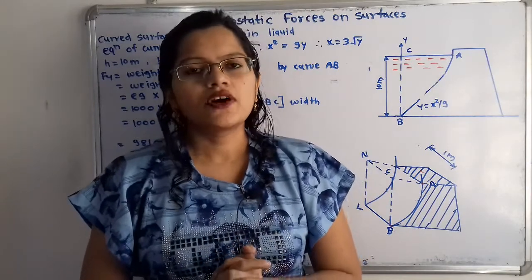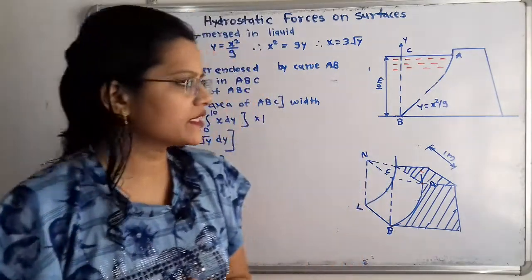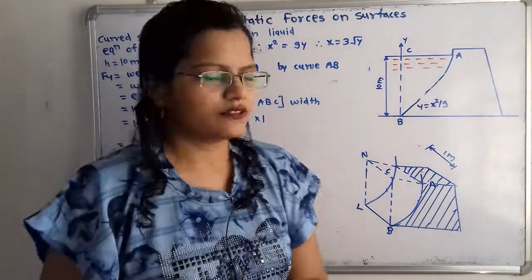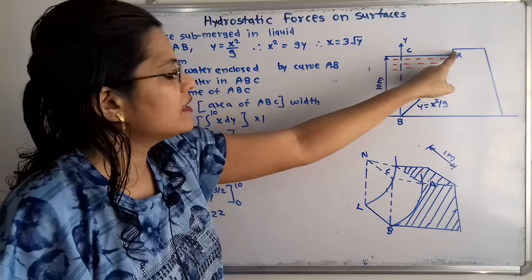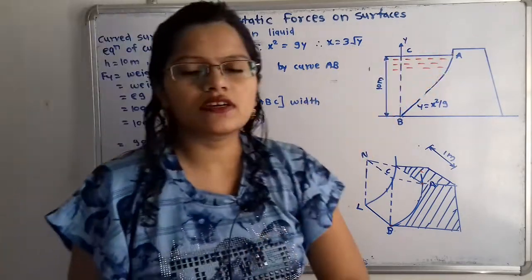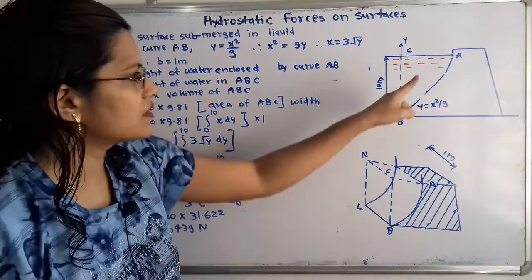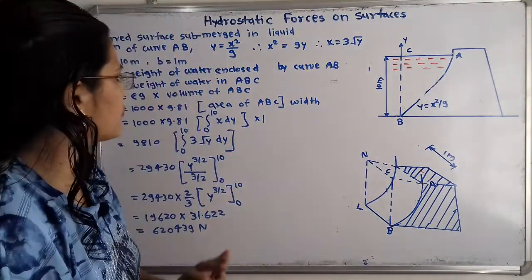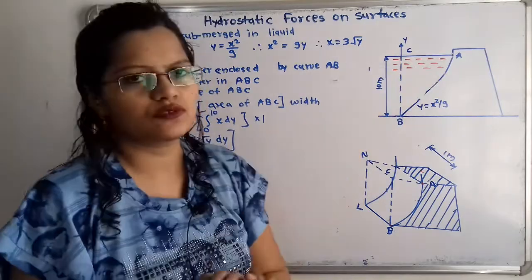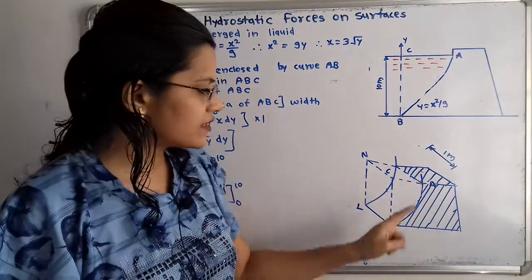Now we calculate the vertical component Fy, which is the weight of water enclosed by curve AB. From point A we extend a horizontal line, and from point B we take a vertical line; their intersection encloses the area ABC. Fy = weight of water in portion ABC = ρ × g × volume of ABC = ρ × g × (area of ABC × width). Width is 1 meter.